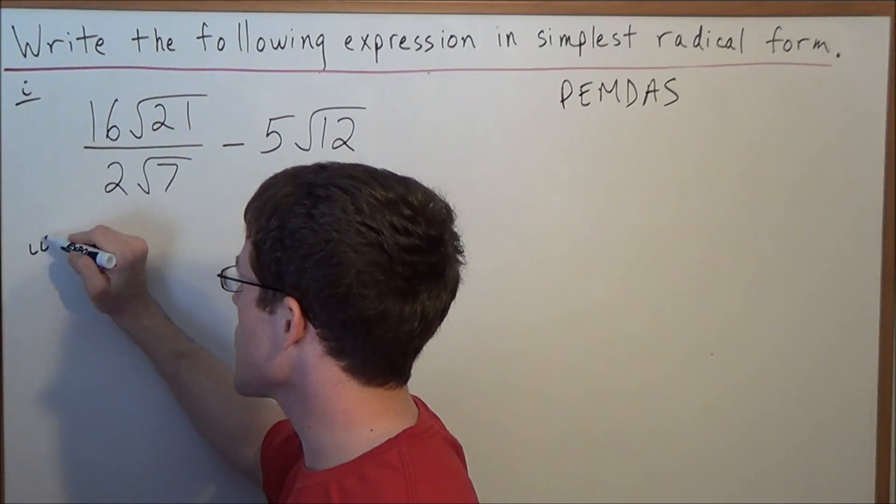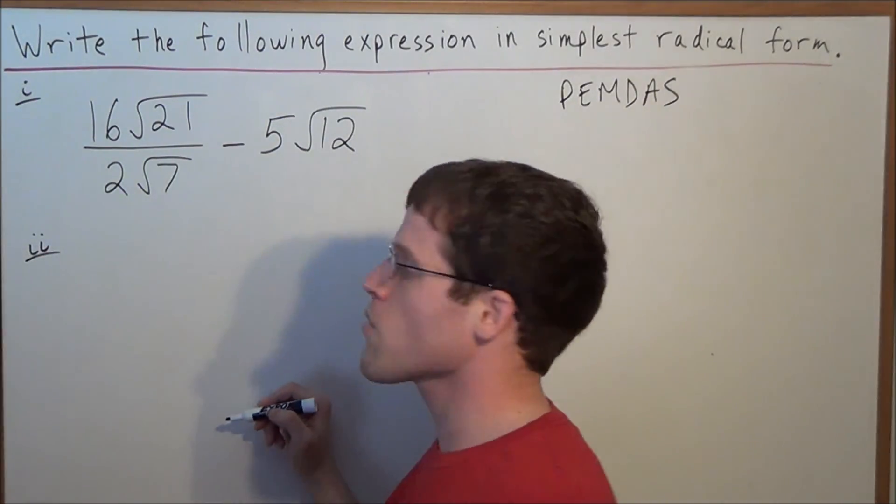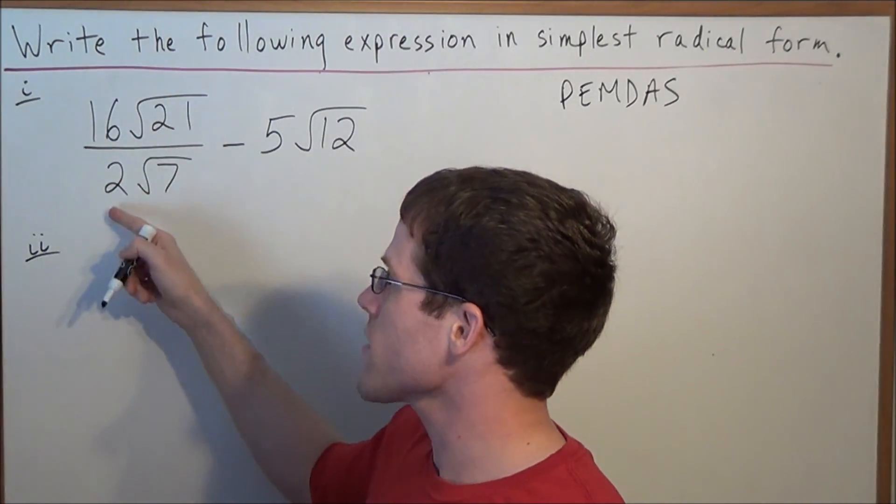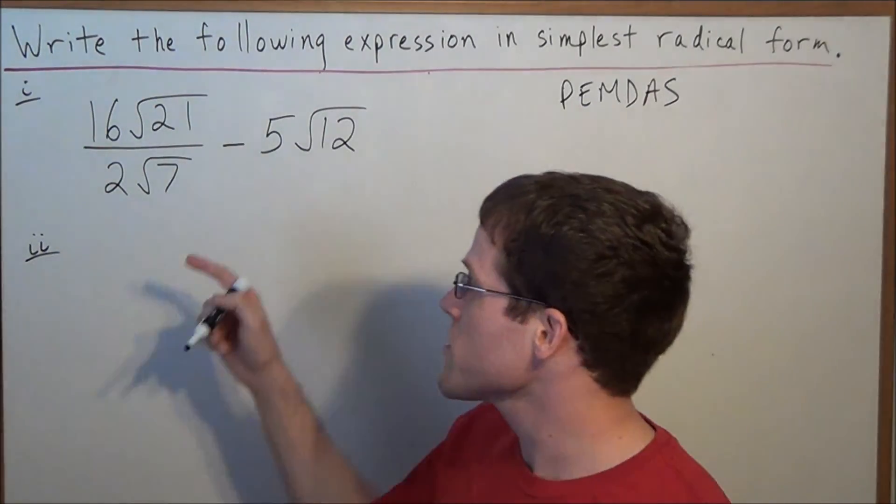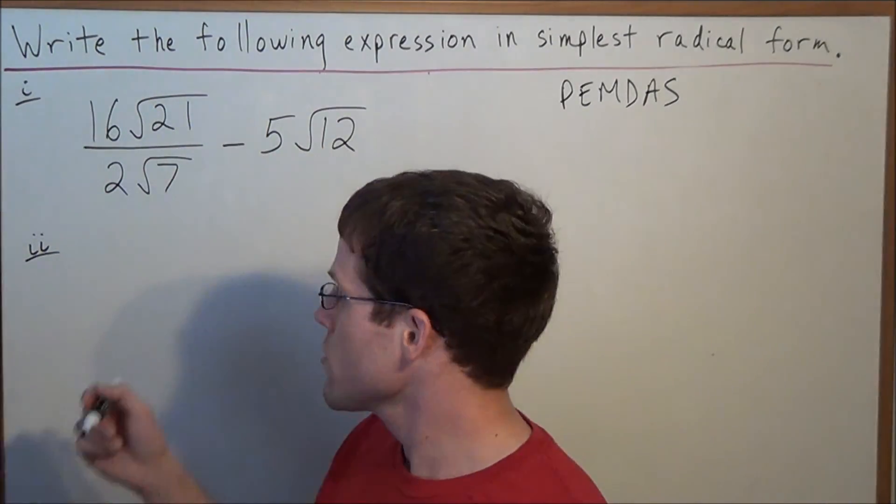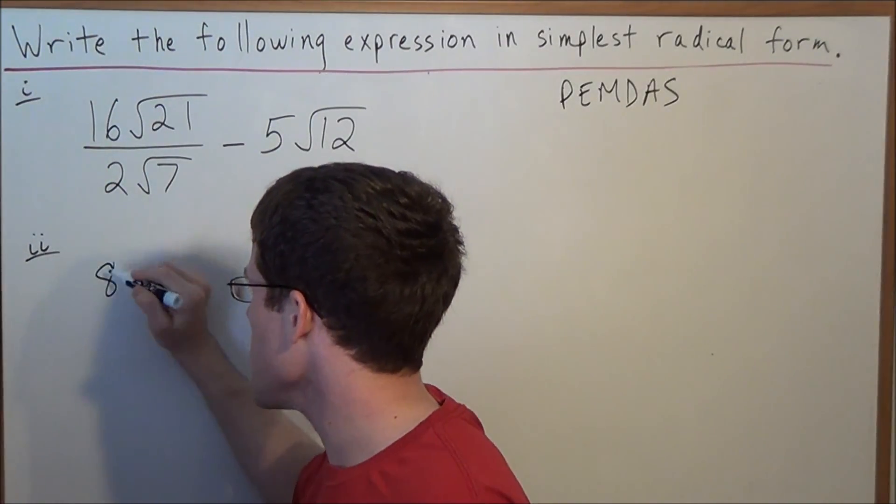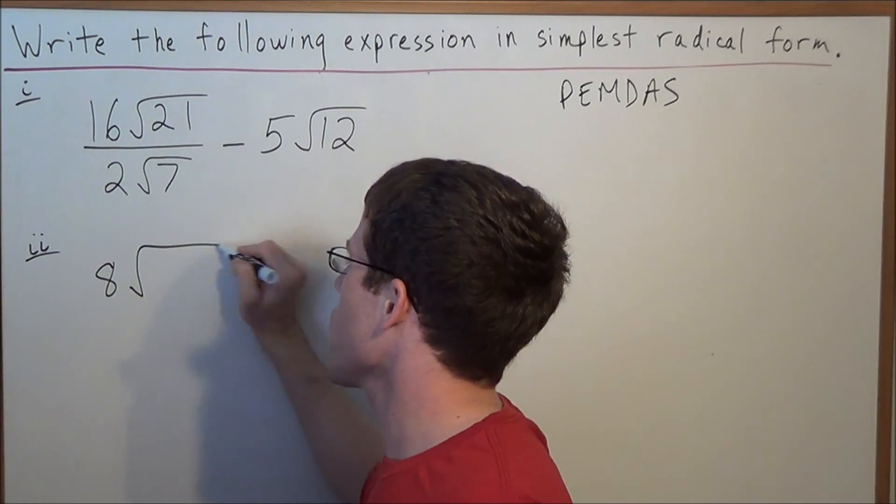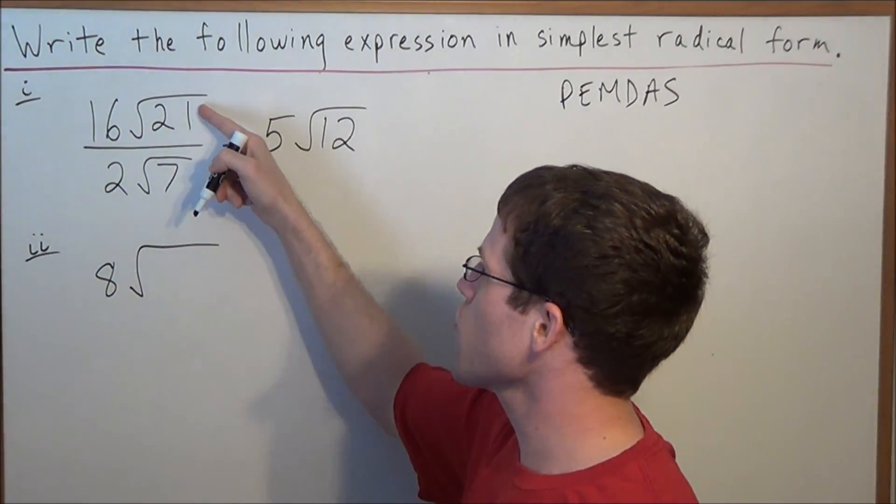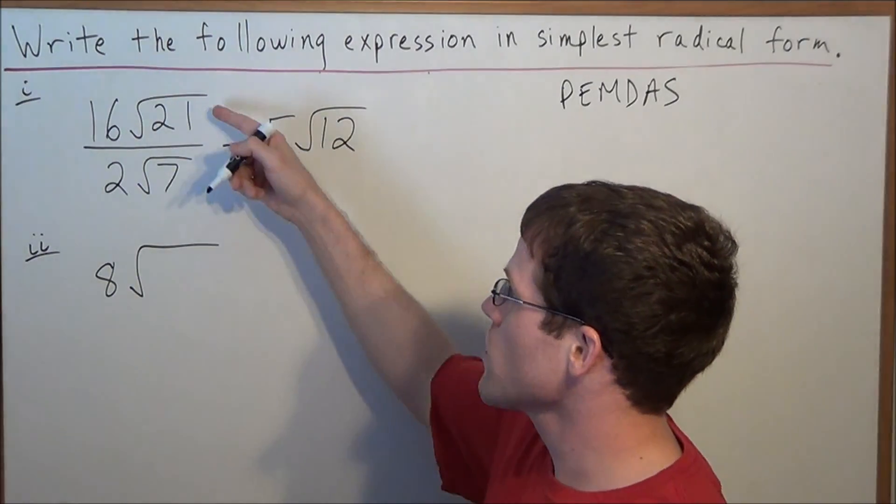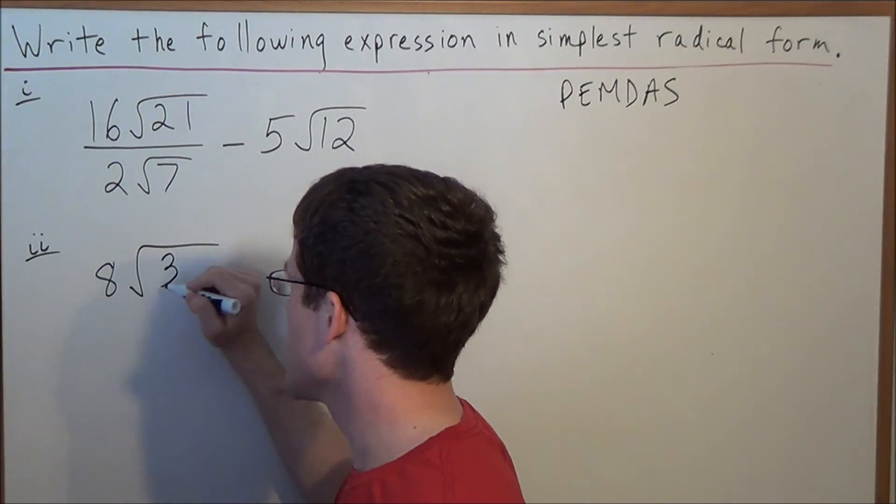So we'll call the next line line 2, but when we divide radical expressions, we divide the numbers outside the radicals, and then we divide the numbers inside the radicals. So if we take this piece by piece, 16 divided by 2 is 8, and now we throw on our radical, and we're dividing 21 divided by 7. We're dividing the numbers inside the radical. And 21 divided by 7 is 3.